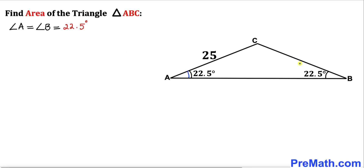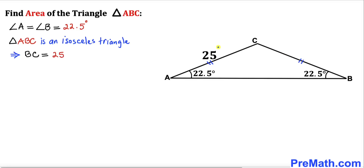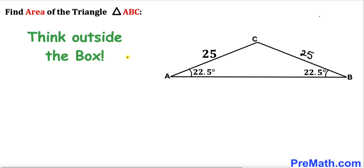We know that angle A and angle B are both 22.5 degrees. So that means triangle ABC is an isosceles triangle. In other words, this side length AC is equal to side length BC. We know AC is 25, so therefore BC is going to be 25 units as well.